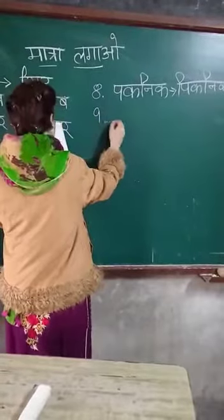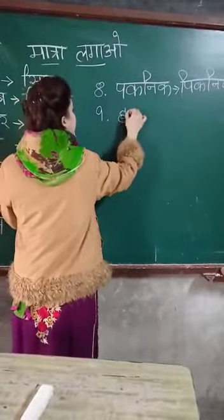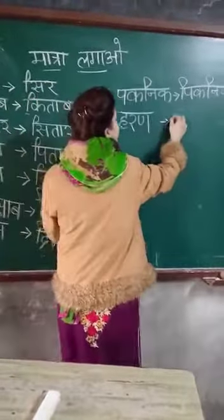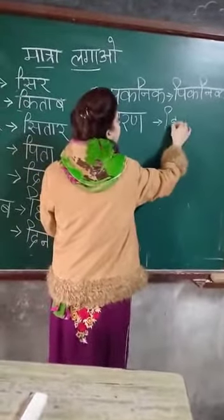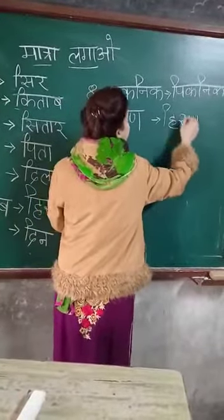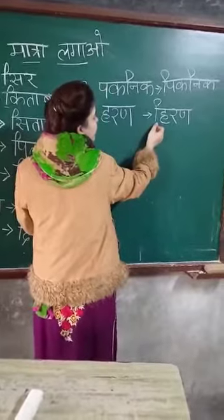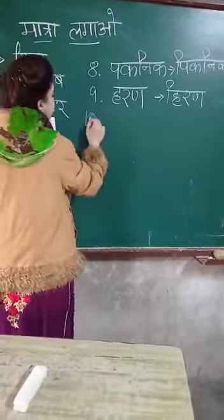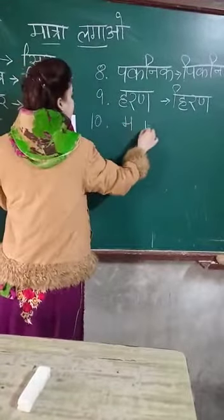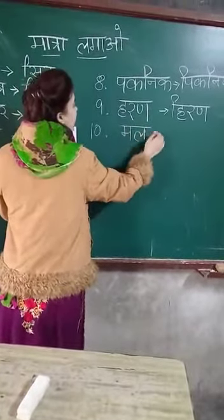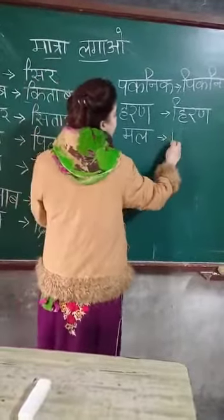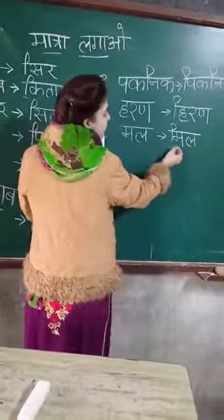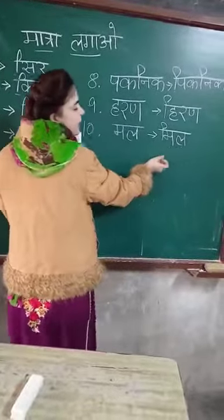Our ninth word is H-R-N. H-R-N will change into H-R-N. Now our last word is the tenth word — M-L, Mal. Mal will change into Mil. We are going to write out Mil with chhoti ee ki matra.